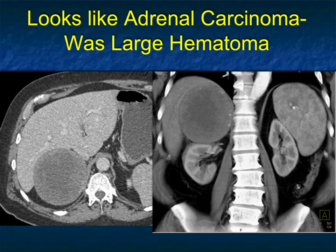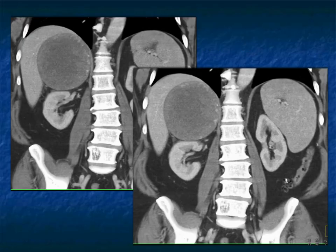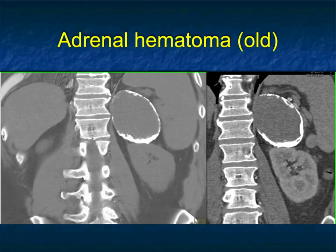Adenomas can be large — we've seen them in the 10 to 11 centimeter range. They can be large without bleeding, but especially if adenomas bleed, they can be large and a great mimicker of malignancy. Here's another case: patient with vague abdominal pain and a large right adrenal mass. You can see why you'd think about a carcinoma. You go through the differential, but you worry about malignancy based on size and maybe a little peripheral enhancement. That was a hematoma.